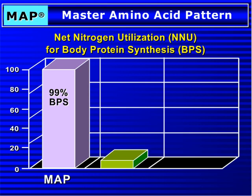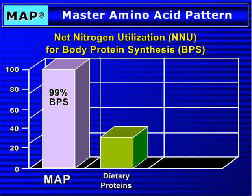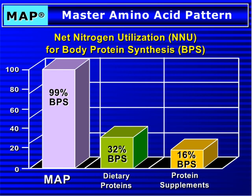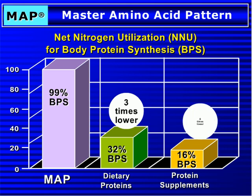By comparison, the most nutritious dietary proteins, such as meat, fish, or poultry, provide an average of 32% NNU; consequently, only 32% of their constituent amino acids can act as precursors of BPS. Meanwhile, most protein supplements only provide an average of 16% NNU, because they use milk, soy, casein, or whey as their primary protein source. As a result, only 16% of their constituent amino acids act as precursors of BPS. Therefore, dietary proteins provide a BPS that is at least 3 times lower compared to MAP, while protein supplements provide a BPS that is at least 6 times lower compared to MAP.